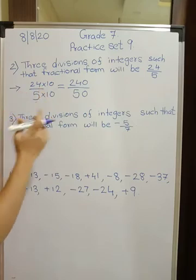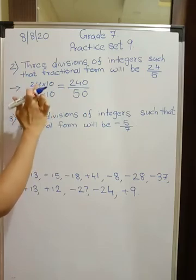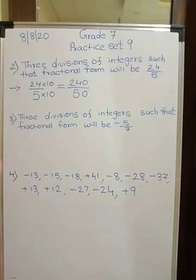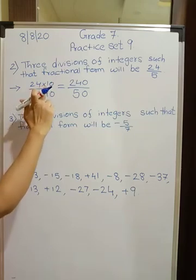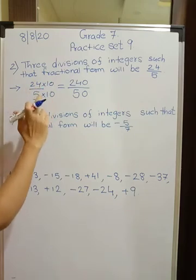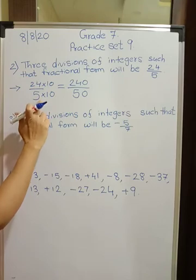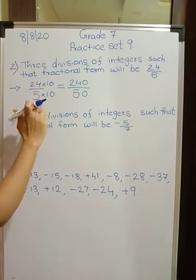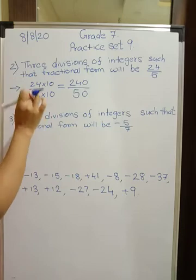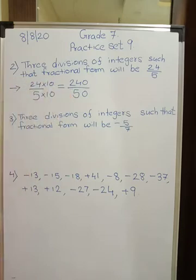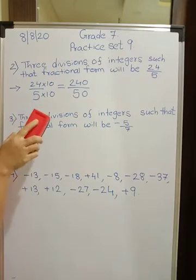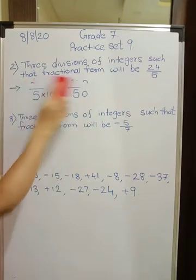Like this you can multiply with any number, but what you have to take care is you have to multiply with the same number, numerator also and denominator also. So multiply numerator and denominator with any number. It should be same and you will get fractional form of 24 upon 5. So first I have told you, 240 upon 10 by multiplication with 10 you got it.